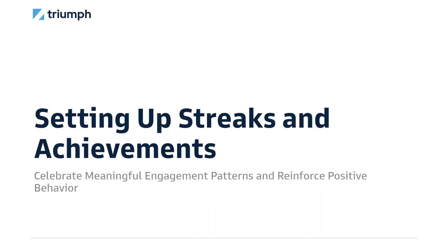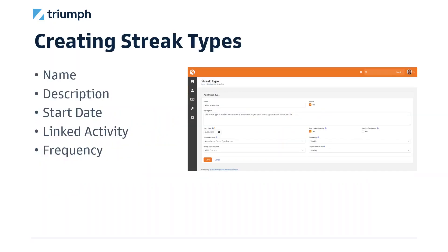Now that we've discussed what streaks and achievements are, we're going to walk through setting up streaks and achievements to celebrate meaningful engagement patterns and reinforce positive behavior. Before setting up streaks and achievements, make sure to review the engagement manual. First, we're going to create new streak types. For our example, we're creating a streak type for attendance group type purpose. Note that group type purpose is a defined type and is defined on the group type.